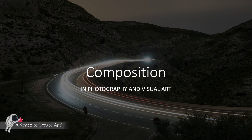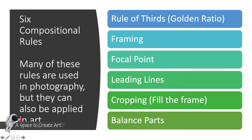Let's talk about composition in photography and in visual art. There are six basic compositional rules, and many of them are used in photography but can also be applied when creating our own art. The six basic rules are the rule of thirds, also known as the golden ratio, framing, focal point, leading lines, cropping or filling the frame, and balancing parts.